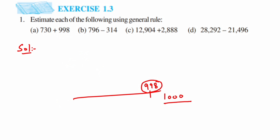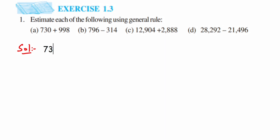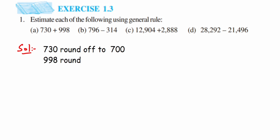So writing it down: 730 rounded off gives 700, and 998 rounded off gives 1000. Since the operation is addition, we add them: 700 + 1000 = 1700. So the estimated sum is 1700.